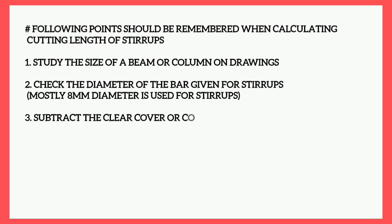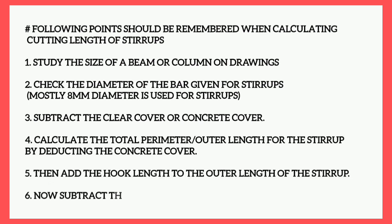The following points should be remembered when calculating the cutting length of stirrups: first, study the size of the beam or column on the drawings; second, check the diameter of the bar given for stirrups — mostly 8mm diameter is used; third, subtract the clear cover or concrete cover; fourth, calculate the total perimeter or outer length for the stirrup by deducting the concrete cover.